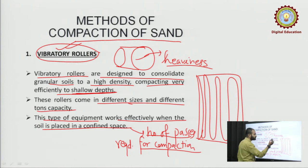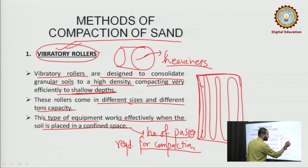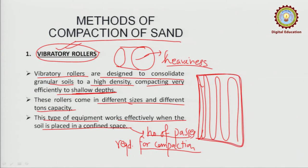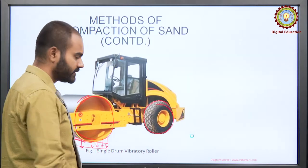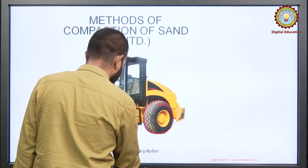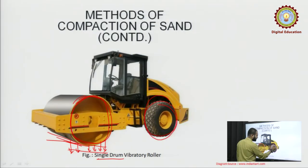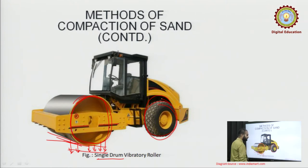The first pass is made, then a second pass may be used — it will depend upon the area as well as the degree of compactness required. As shown in the diagram, this is the single drum roller. Sometimes in the back part also a drum may be fitted — that would be a double drum vibratory roller.